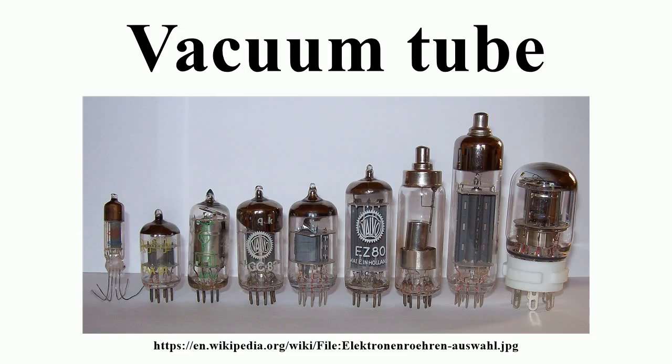Since the tube contains a vacuum, the anodes in most small and medium power tubes are cooled by radiation through the glass envelope. In some special high-power applications, the anode forms part of the vacuum envelope to conduct heat to an external heat sink, usually cooled by a blower. Klystrons and magnetrons often operate their anodes at ground potential to facilitate cooling, particularly with water, and instead operate with high-negative voltages on the filament and cathode.